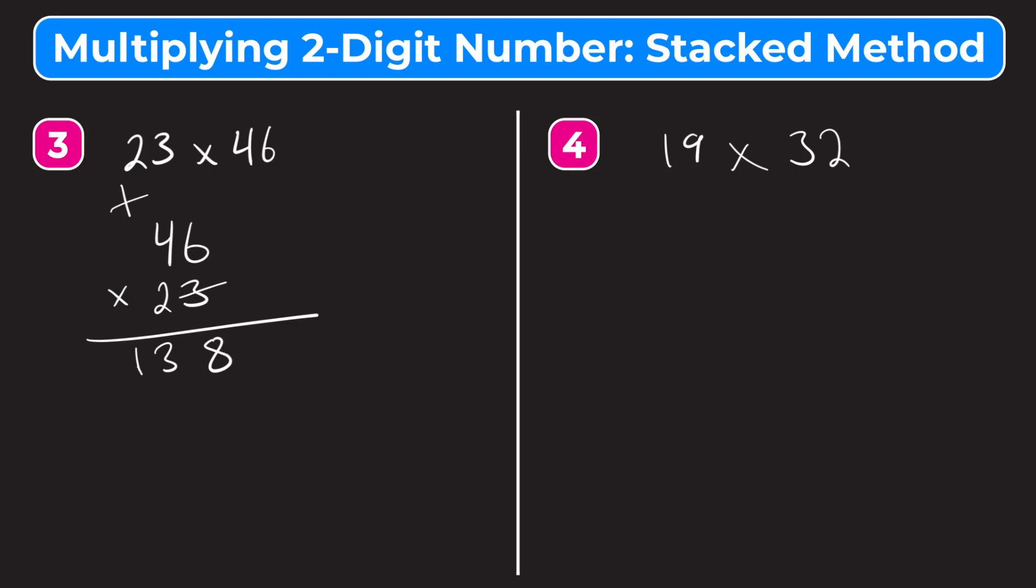Now we have 2 times 6, but be careful. Remember, this does not go under the 8. We have to put the 0 there, because this represents 20. So 2 times 6, that's 12. So we put a 2, carry the 1 again. Let's erase that, make it look better. We'll put the 1 up here so you know it's not 146. 2 times 4, that's 8, plus 1, is 9.